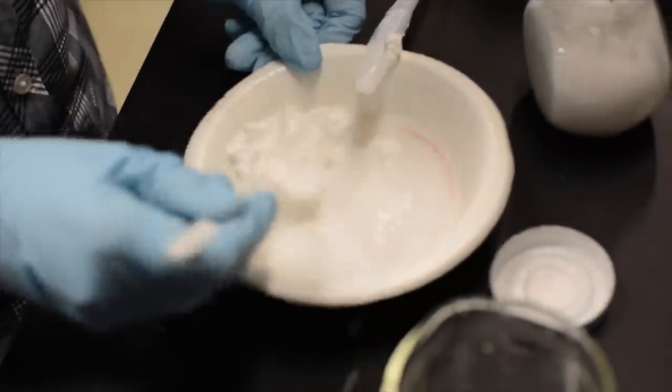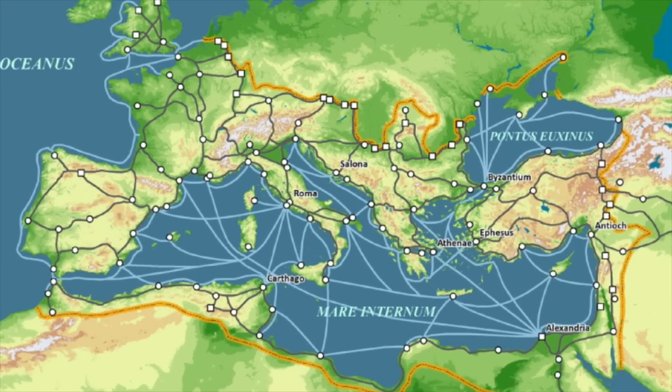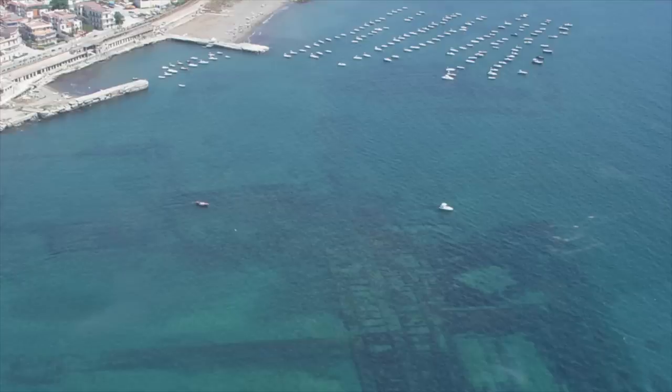The Romans used the concrete to build the Pantheon, the Colosseum, but they also shipped the pozzolana throughout the Mediterranean making possible the construction of several harbors.